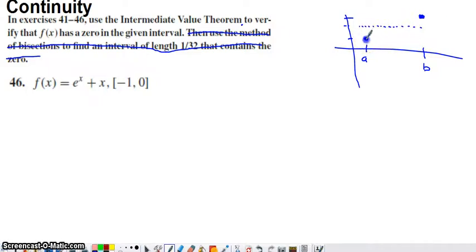How are you going to get from here a comma f of a to here b comma f of b with a continuous graph without crossing this intermediate y value at least once. You can draw a line. You can draw a wave. You can draw anything you want. As long as it's continuous you have to cross this y value at least once. And that's going to occur at an x value that happens to be between a and b.